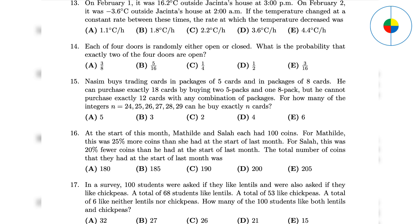Question 13 - From 3 PM to 2 AM, it's 11 hours, and the temperature decreased 19.8 degrees Celsius. The rate is 19.8 divided by 11, which is 1.8. Question 14 - This is simple probability. There are 16 possible combinations, and only 6 of them have exactly 2 doors open, so the answer is A.